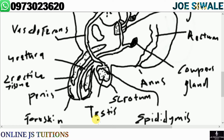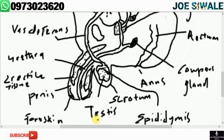Inside the testes, we find the seminiferous tubules. The walls of the seminiferous tubules contain cells called the germinal epithelium, which is the actual site of sperm production. These tubules are numerous to increase the surface area for sperm production.